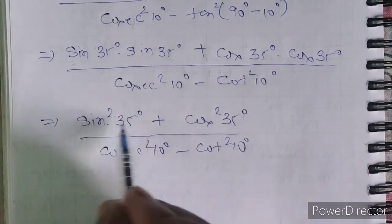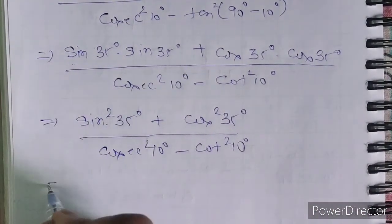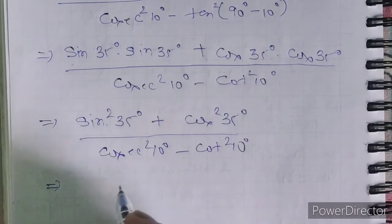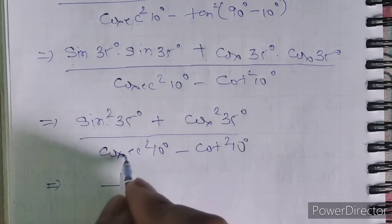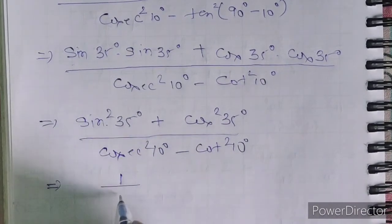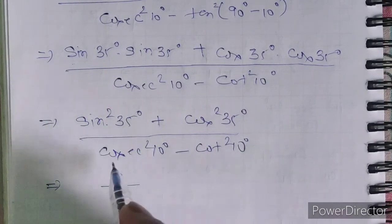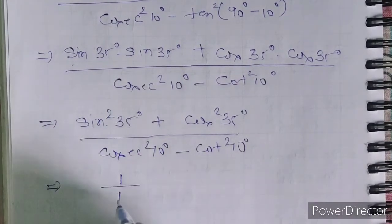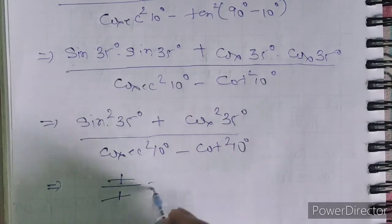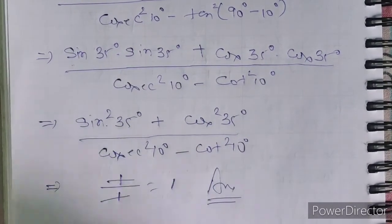Now sin square theta plus cos square theta equals 1, and cos square theta minus cos square theta equals zero in the denominator. So we get 1 over 1 — the ones cancel and this will be the answer: 1.